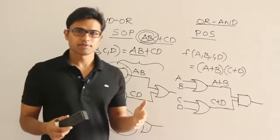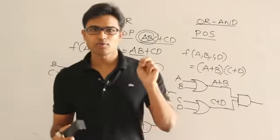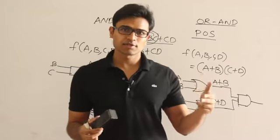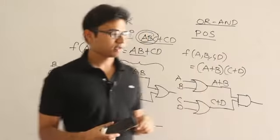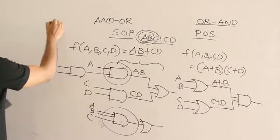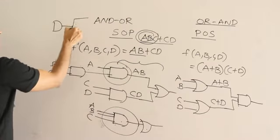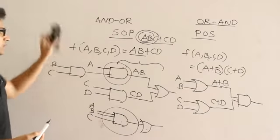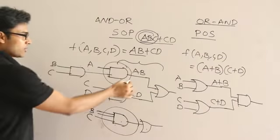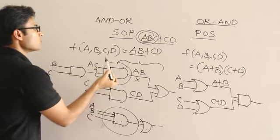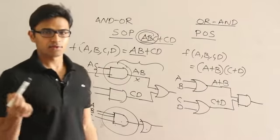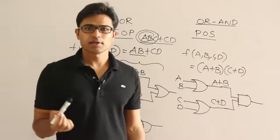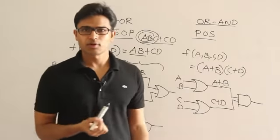In most of our exam examples, we assume fan-in of 2, meaning every gate has only two inputs. Fan-out is generally taken as 1, so we don't worry about it. Fan-in is assumed to be 2 unless specified otherwise; if they specify something different, you take that value accordingly.